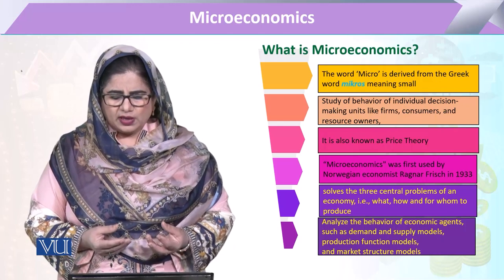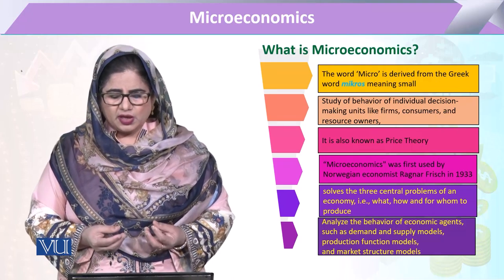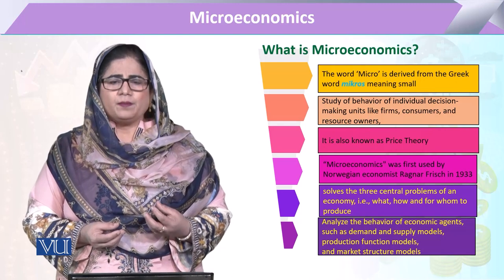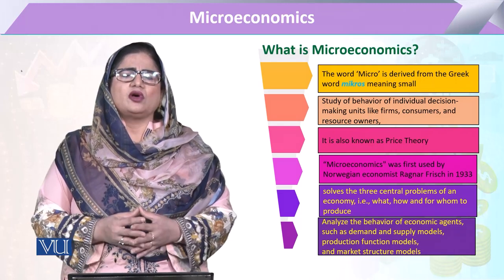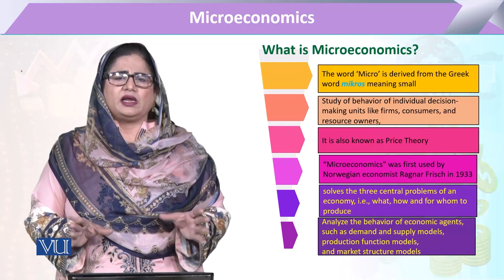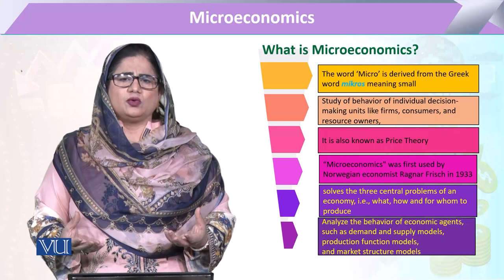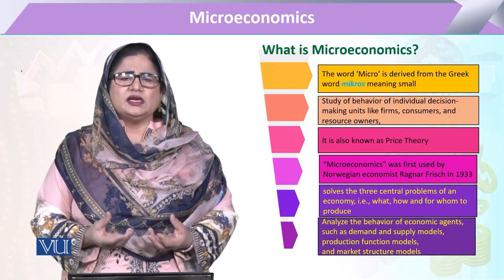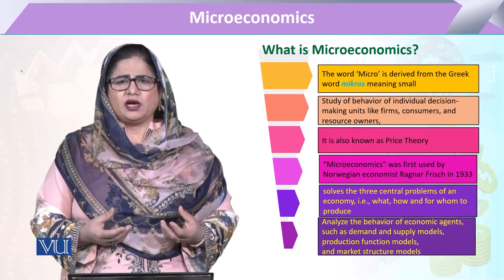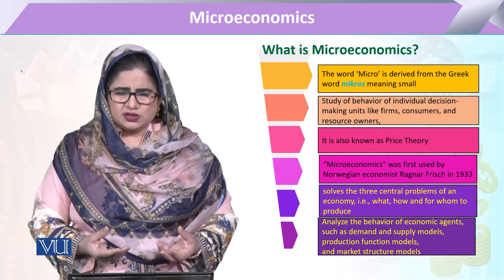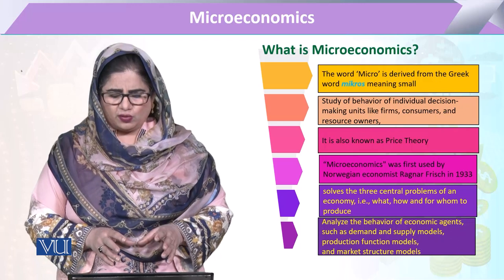The term microeconomics was first utilized by Norwegian economist Ragnar Frisch. In microeconomics, when we look at the biggest economic questions — what to produce, how to produce, and how much — what can we do at the individual level? How can we deal with firms and individuals to answer those questions? What procedures will be used? All this study comes under the school of microeconomics.